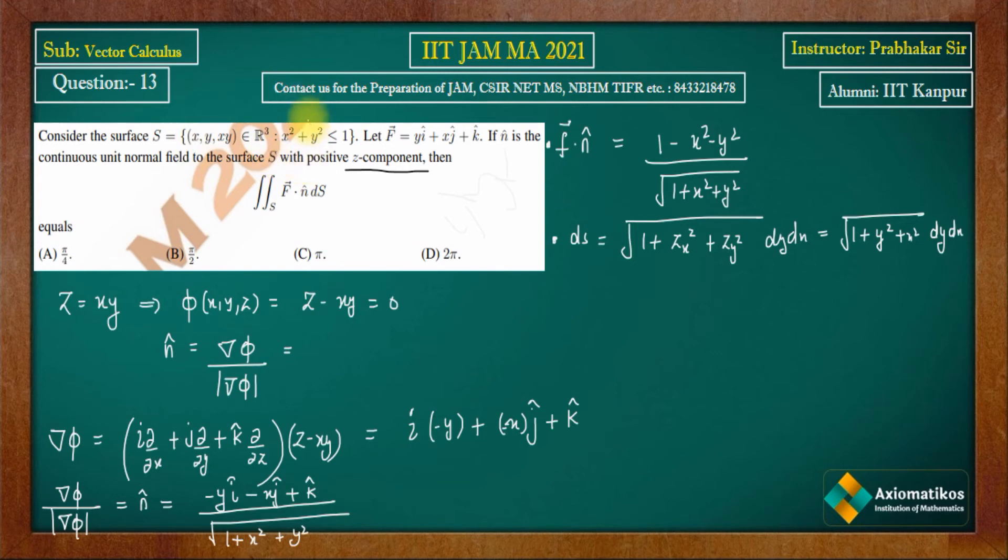So on the base, you have a cylinder. So what's happening is that from the base, a cylinder is going upward in the direction. Now on top, there's some surface, whatever it looks like. But when you take its projection on the xy plane, a circle will come. From the top, whatever it looks like, z equals xy, I don't know how to plot it.